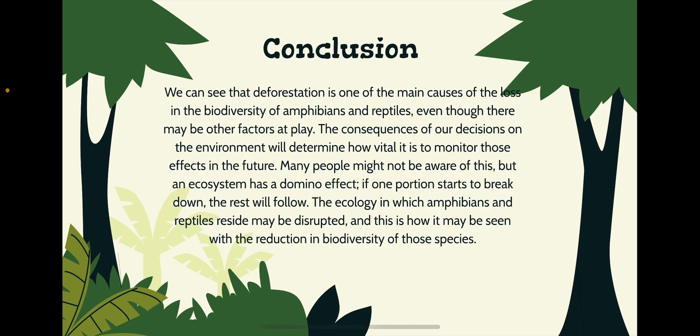Conclusion. We can see that deforestation is one of the main causes of the loss in the biodiversity of amphibians and reptiles. Even though there may be other factors at play, the consequences of our decisions on the environment will determine how vital it is to monitor those effects in the future. Many people might not be aware of this, but an ecosystem has a domino effect — if one portion starts to break down, the rest will follow. The ecology in which amphibians and reptiles reside may be disrupted, and this is how it may be seen with the reduction in biodiversity of those species.